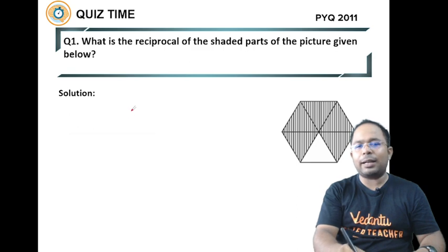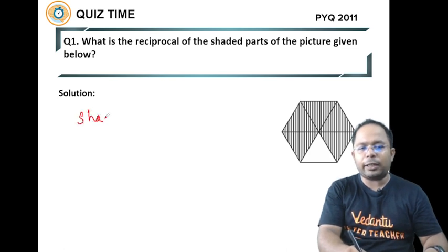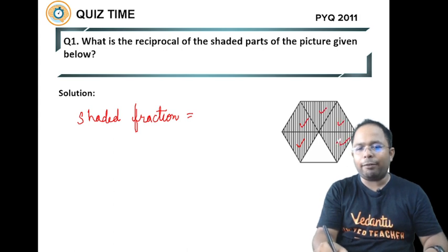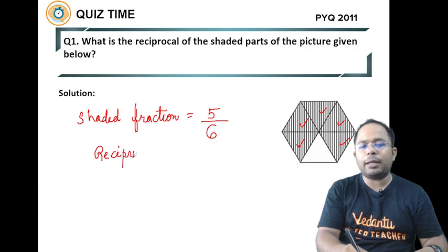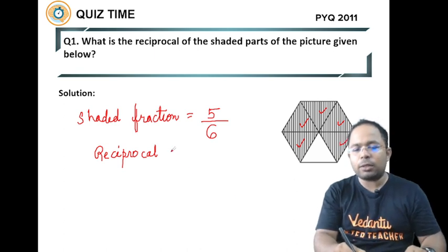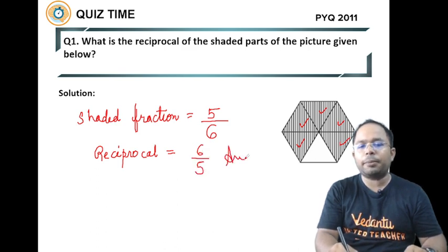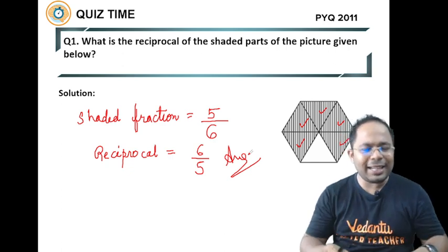Let's see the right answer. If your answer is 6 by 5 then you are super amazing. Let's see how we can get the answer. The shaded fraction is 1, 2, 3, 4, 5 parts out of total 6 parts, which is 5 by 6. Now we have asked the reciprocal. The reciprocal means if x equals 1, then the reciprocal is 1 by x. So here we give denominator to numerator and numerator to denominator. That's the answer, 6 by 5.